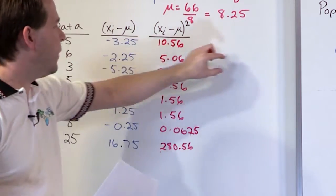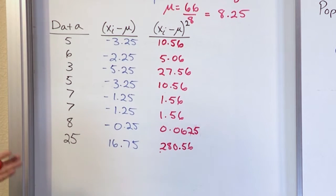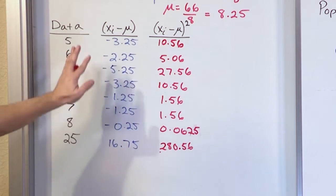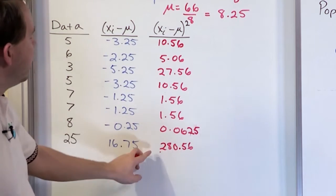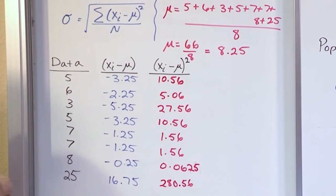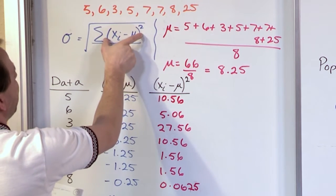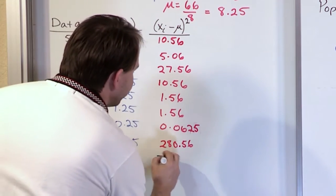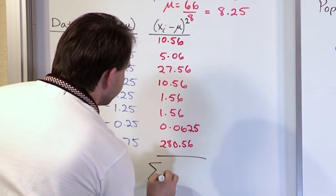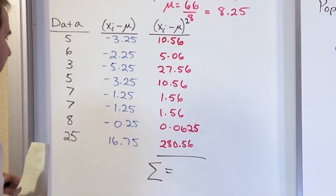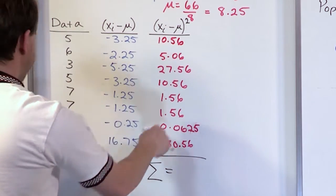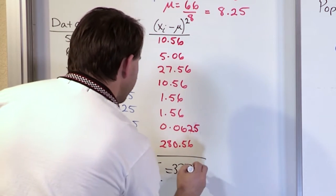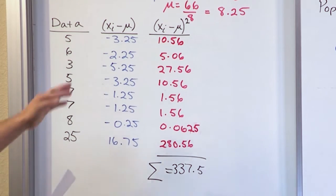So instead of writing it all out as an equation over and over again, you start with your data point, subtract the mean, write that down, then square everything. You should always have positive values in the squaring column. Then I draw a line and write sigma equals to indicate I'm adding everything up. When you add everything up in this column, you get 337.5.